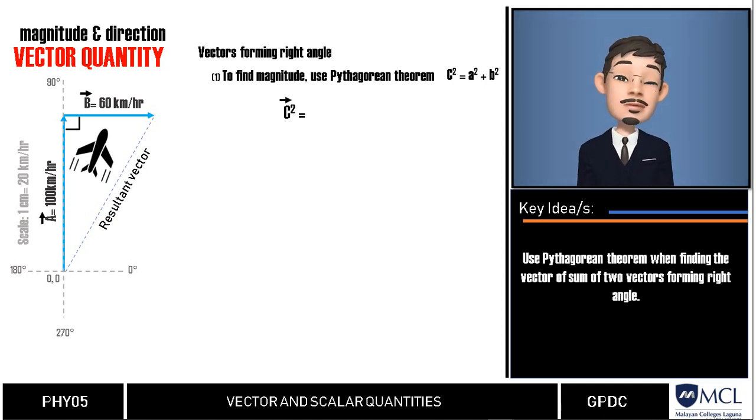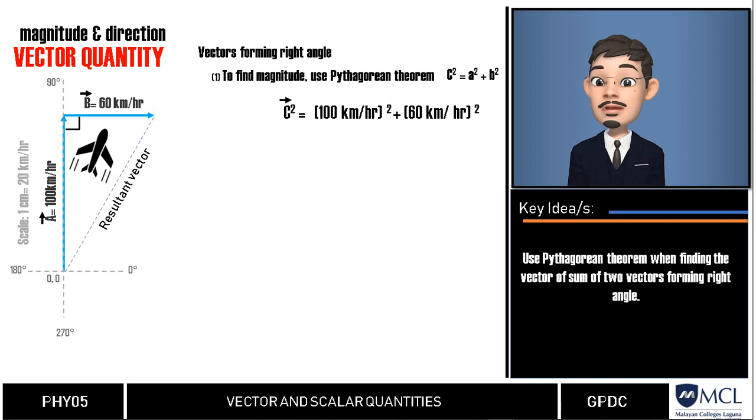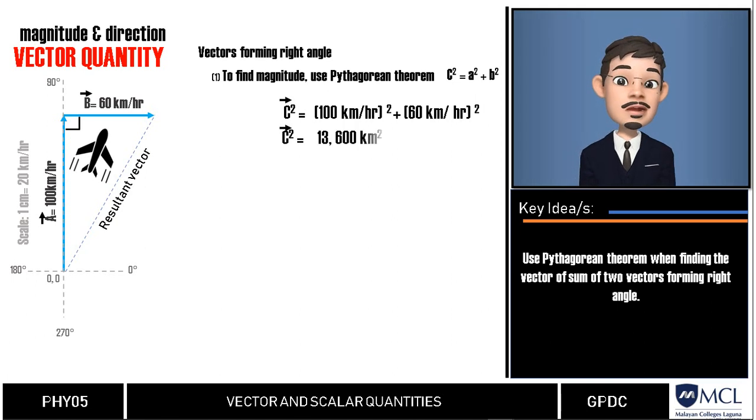Let us apply the volumes in this formula. C squared, which is our resultant, equals to 100 km per hour squared, which is the velocity of the plane, and 60 km per hour squared, which is the velocity of the wind. When we perform this, we will get c squared equals 13,600 km squared over hour squared.